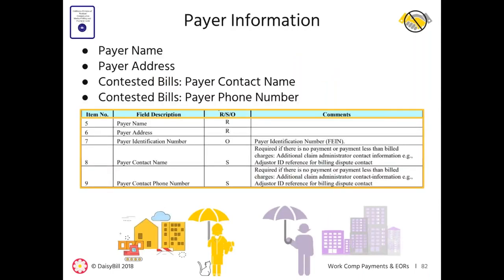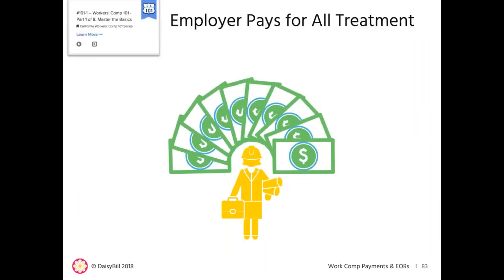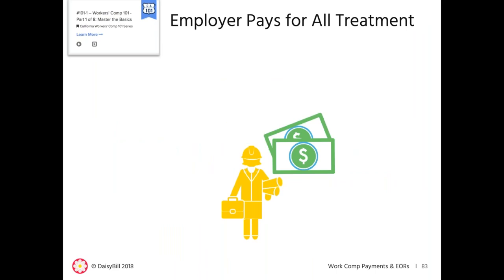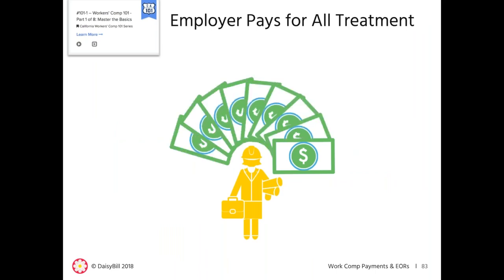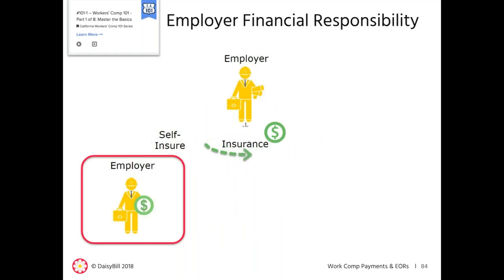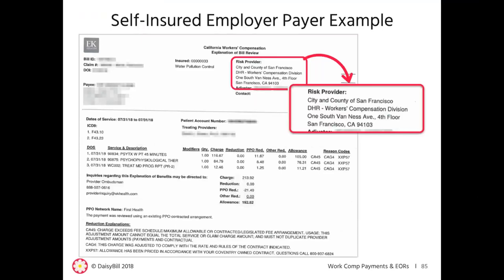Every EOR must also list the payer name and payer address. For contested bills, the EOR must also include the payer contact name and phone number. When an employee is injured at work, there are two ways an employer can pay bills: the employer can elect to be self-insured and pay the medical treatment bills directly, or purchase Workers' Comp insurance and the insurer pays. In this EOR, the risk provider is the city and county of San Francisco — a self-insured government employer. In another EOR for AIG, the employer is JCPenney but the payer is the insurer, American Home Assurance Company.